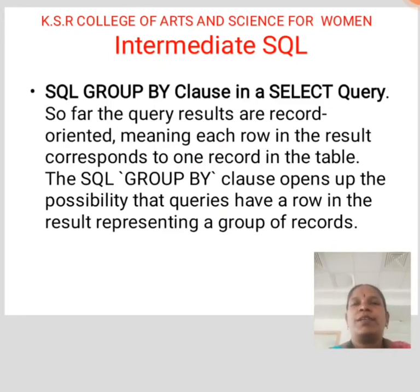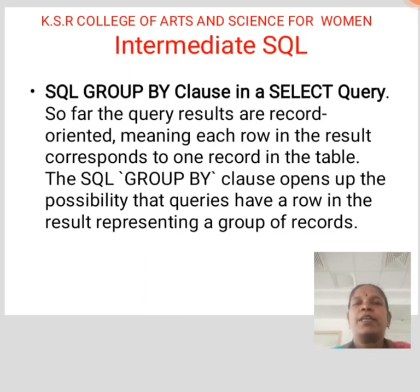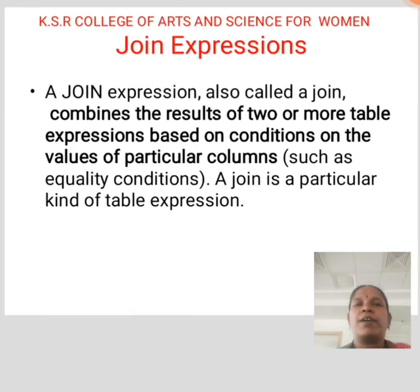Intermediate SQL: GROUP BY clause. In a SELECT query, so far the query results are record-oriented, meaning each row in the result corresponds to one record in the table. The SQL GROUP BY clause opens up the possibility that queries have a row in the result representing a group of records.